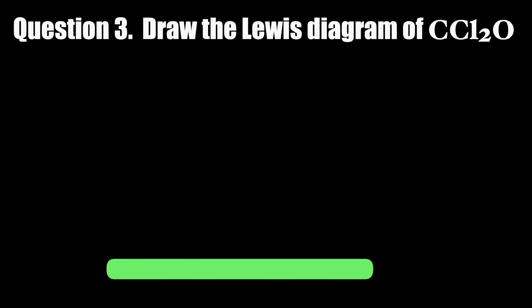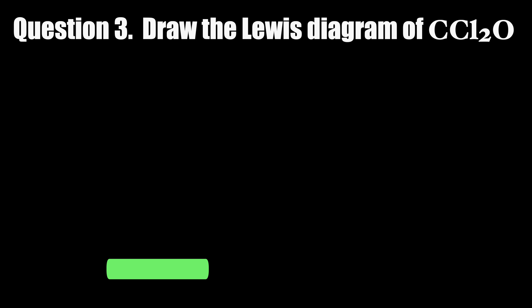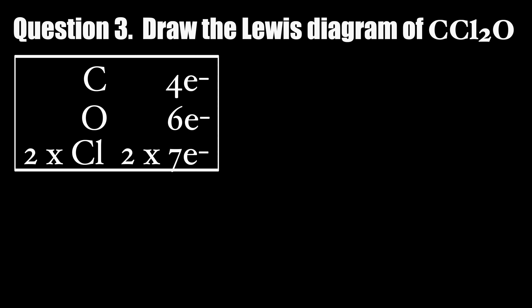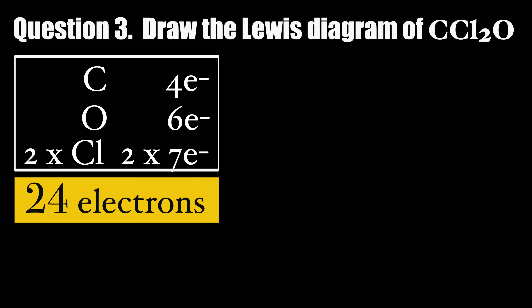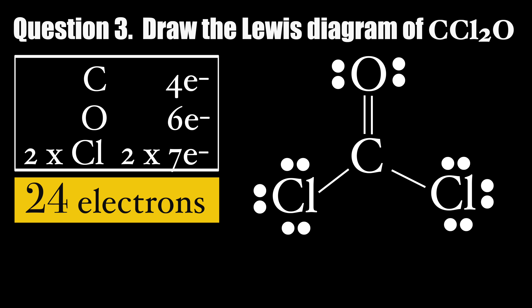Question 3: Draw the Lewis diagram of CCl2O. CCl2O has 24 valence electrons. Carbon is the central atom, double bonded to oxygen.